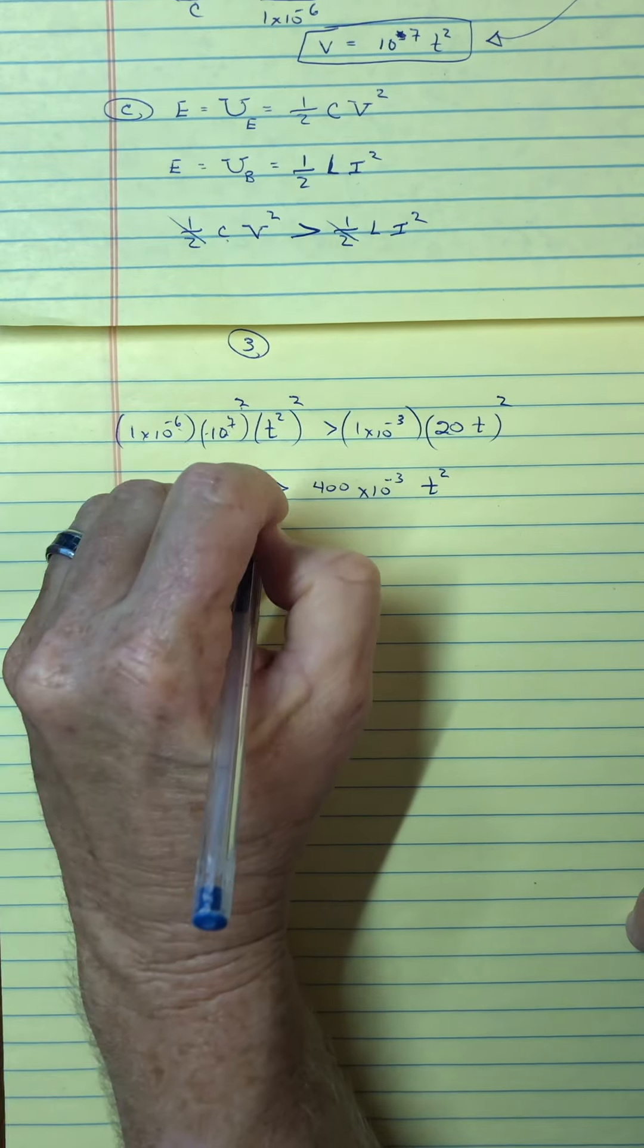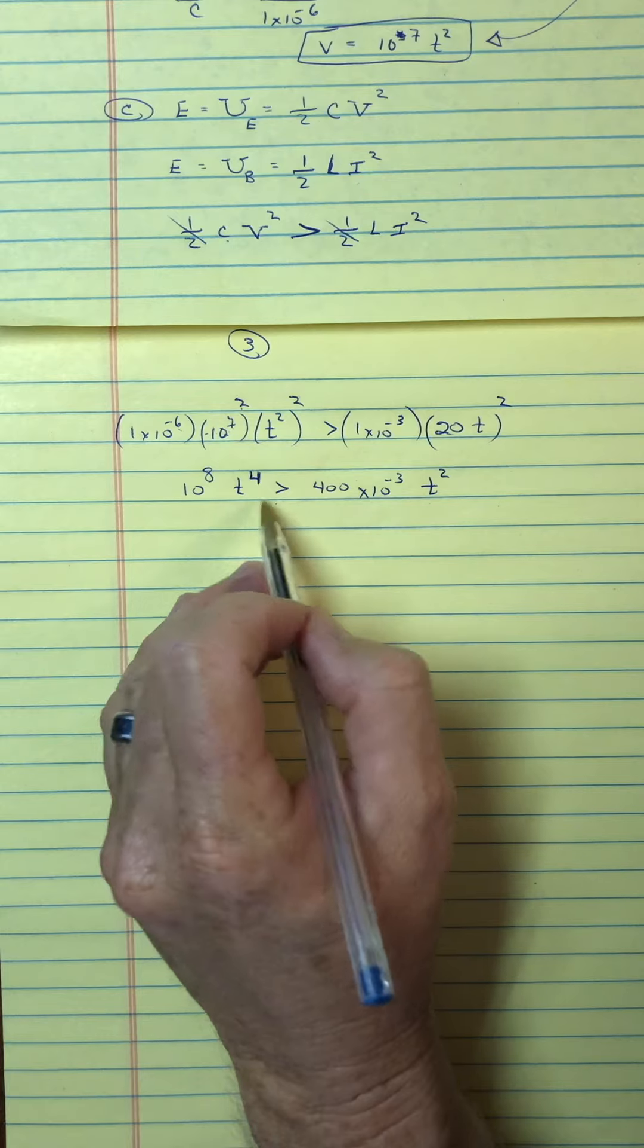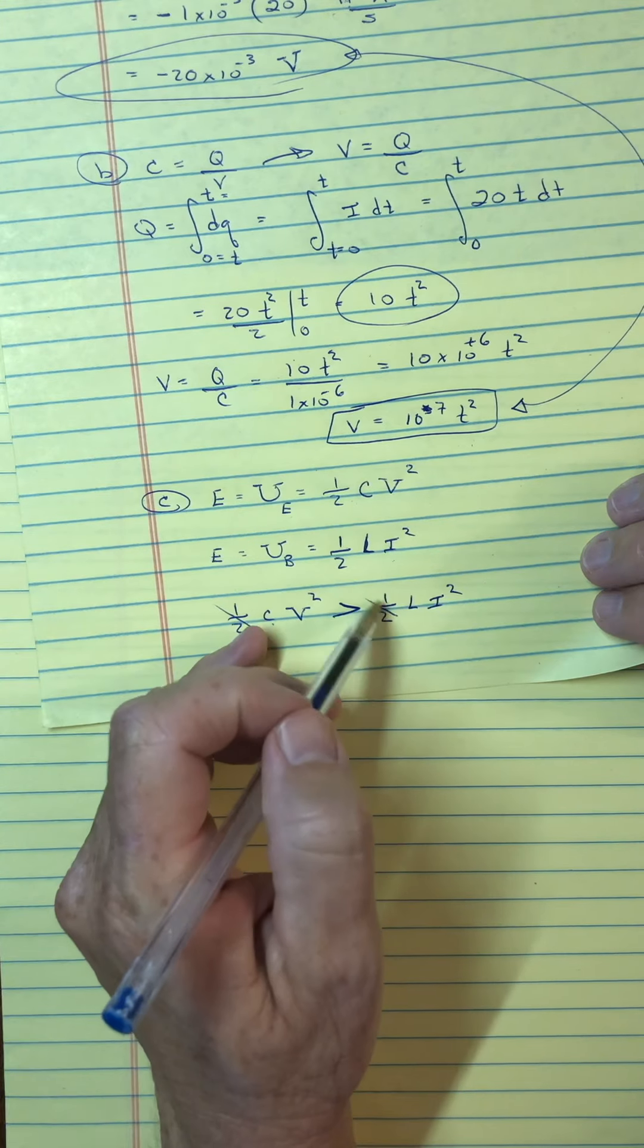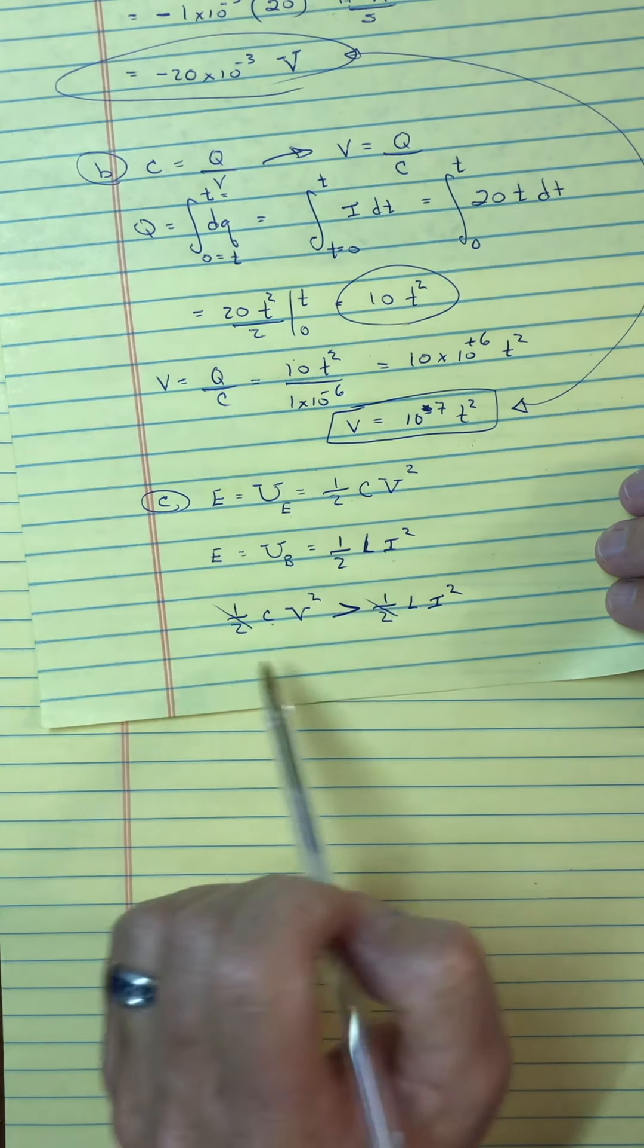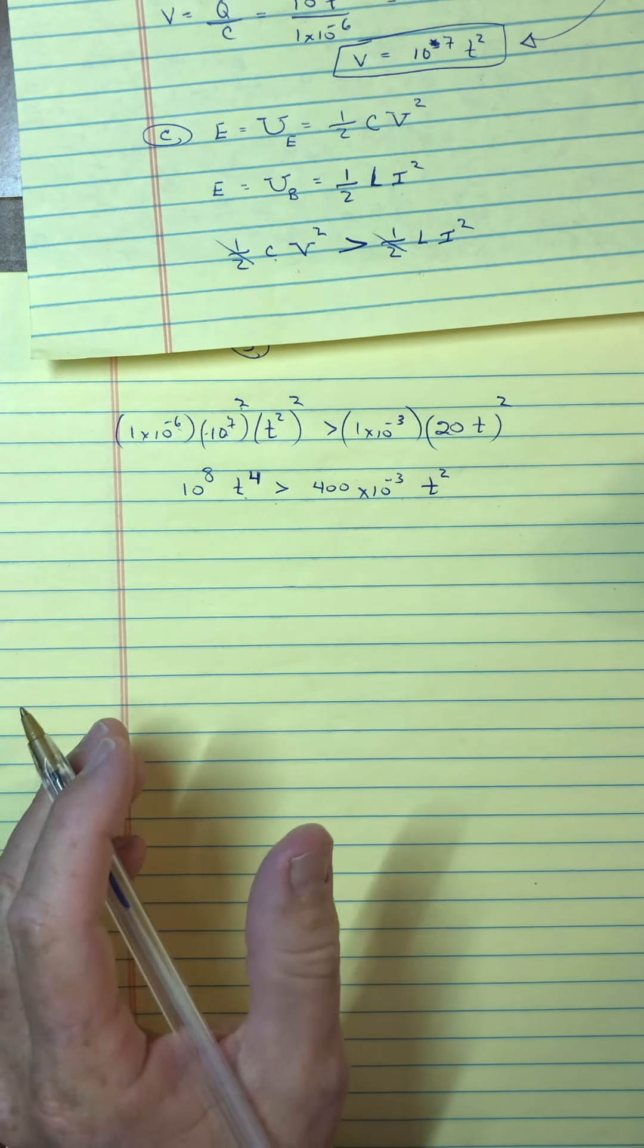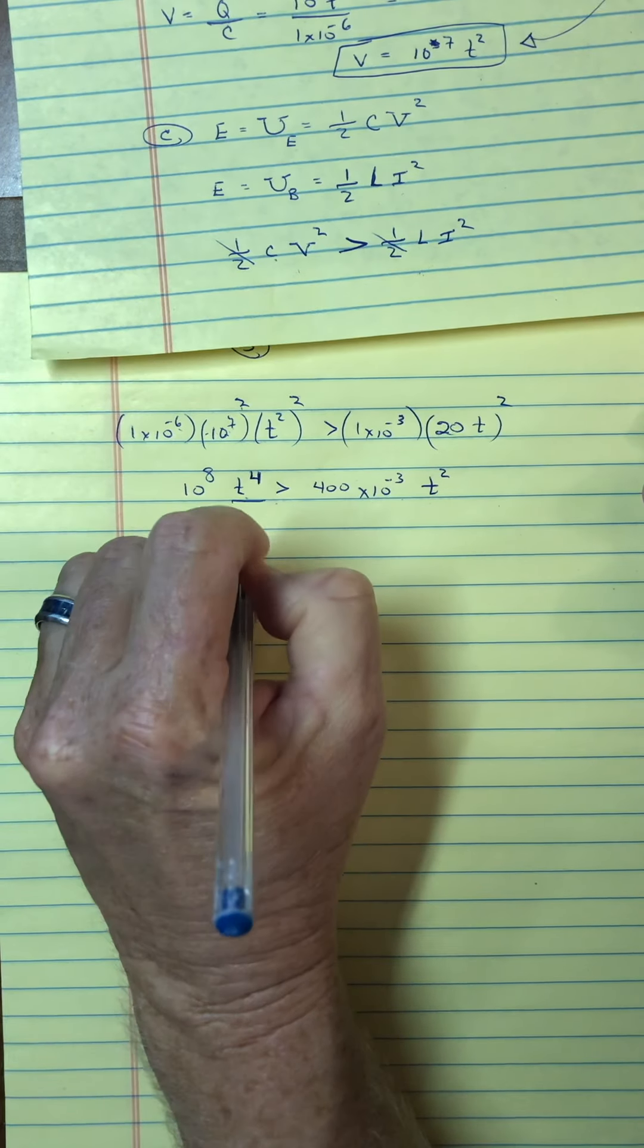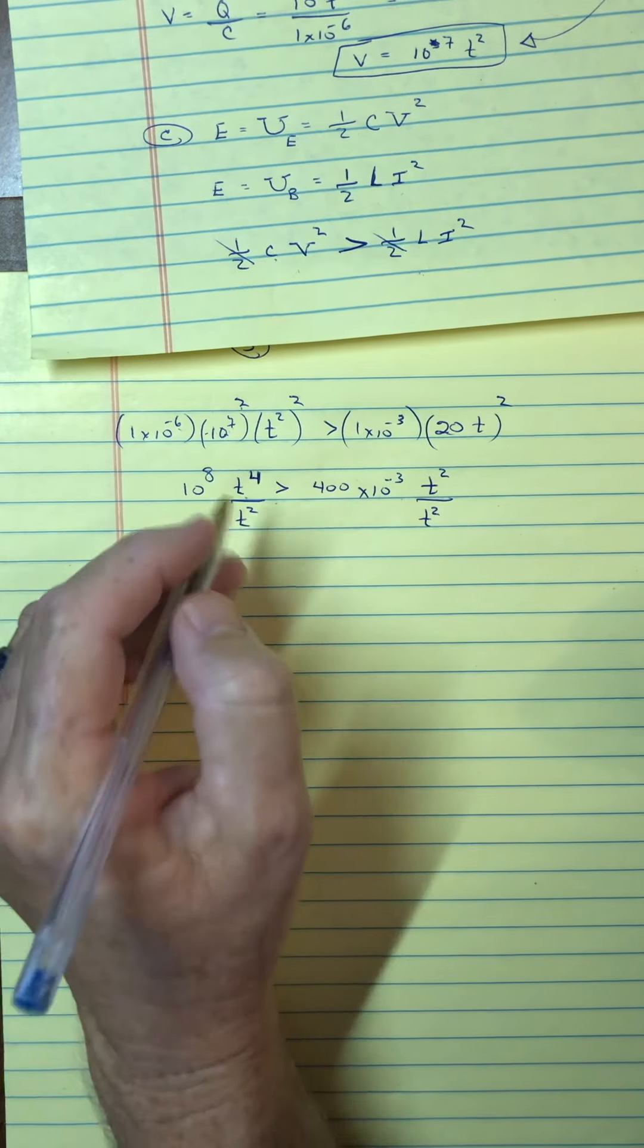And so, when is it greater than? Well, you can see, by the way, they are equal at T equals to 0. 0 there equals 0 there. And, that's what I started to say, is that time equals to 0. They each have 0 energy. They have 0 energy because there's no charge on the capacitor in this one. And, there's also no current in the inductor here. But, solving this for when T doesn't equal to 0. So, if it doesn't equal to 0, I can divide by T squared.